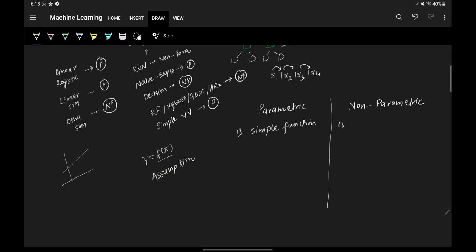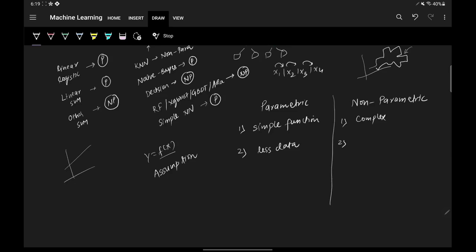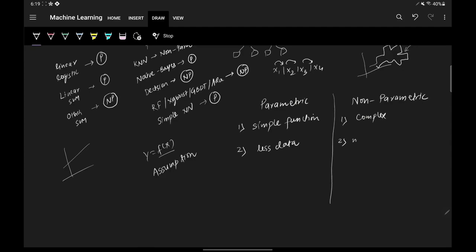Second, because of the assumptions made in parametric algorithms, your task becomes easier and you need less data to train your model. In non-parametric machine learning algorithms, since you have no assumptions and know nothing about your data beforehand, you need more data during the training phase to be confident about the patterns in the data.